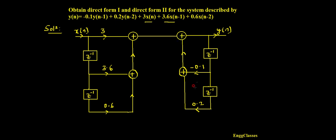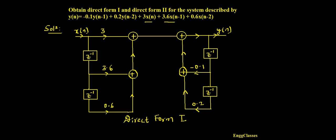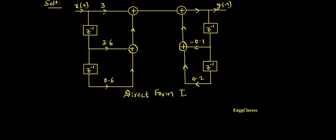Now I have to add all these things. I just have to write the proper arrow marks. This is y(n) equal to — I get this. So this structure that I have drawn so far I would call the Direct Form 1 structure. Now I need to get the Direct Form 2 structure.